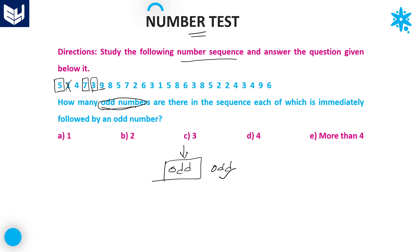Next 9 — 9 is not satisfying because 9 is followed by an even number, so you should not count this one. Next odd number is 5 — 5 is followed by an odd number, so you can count it. Up to now total how many odd numbers are there? Four odd numbers. In case if you get another odd number satisfying the condition, directly take the answer as more than 4. The options are 1, 2, 3, 4, and the fifth option is more than 4.